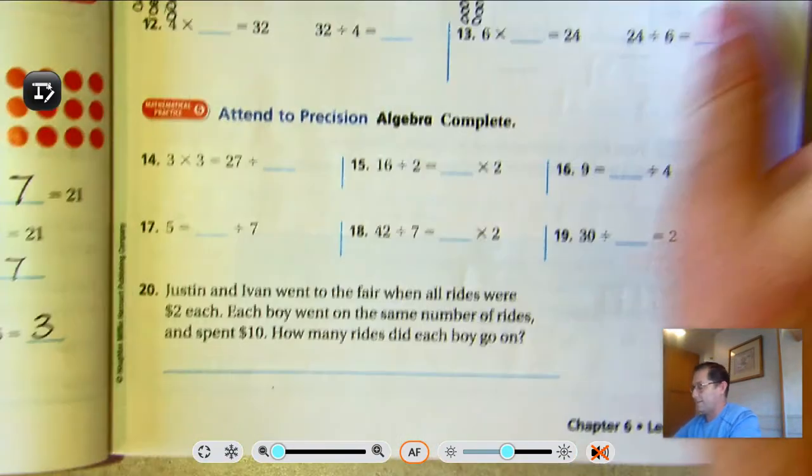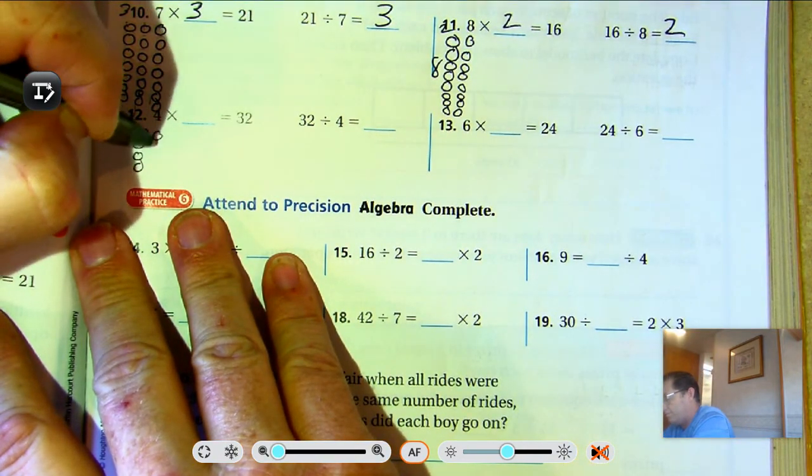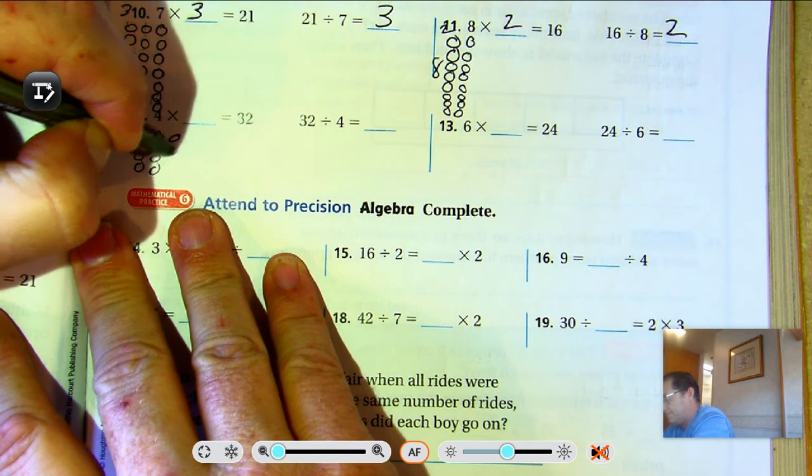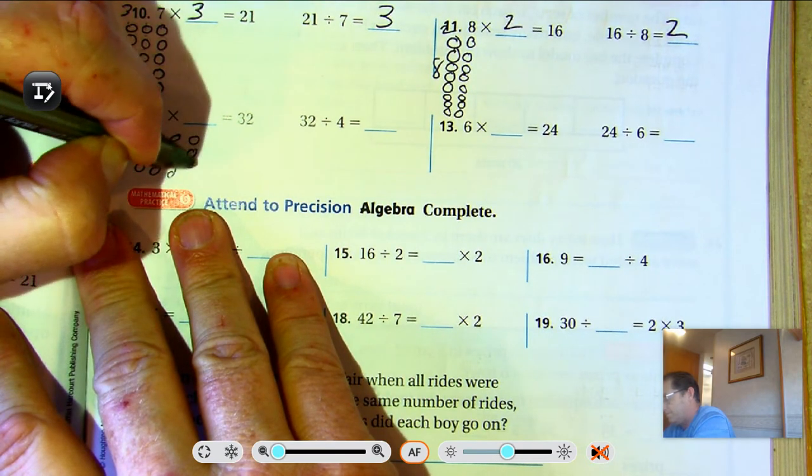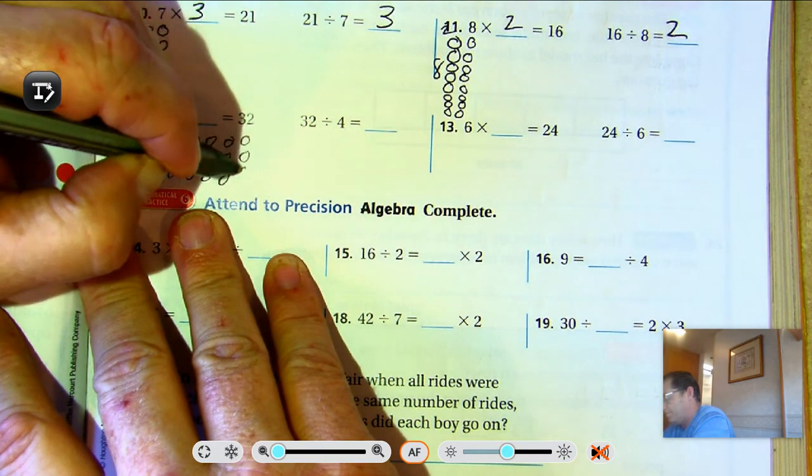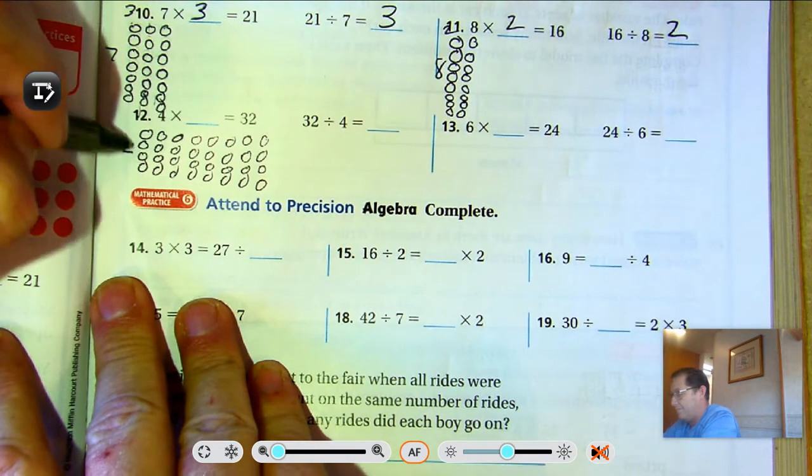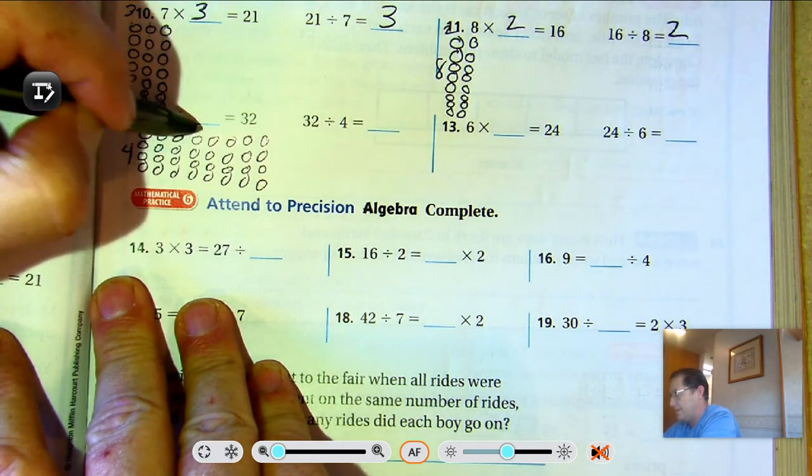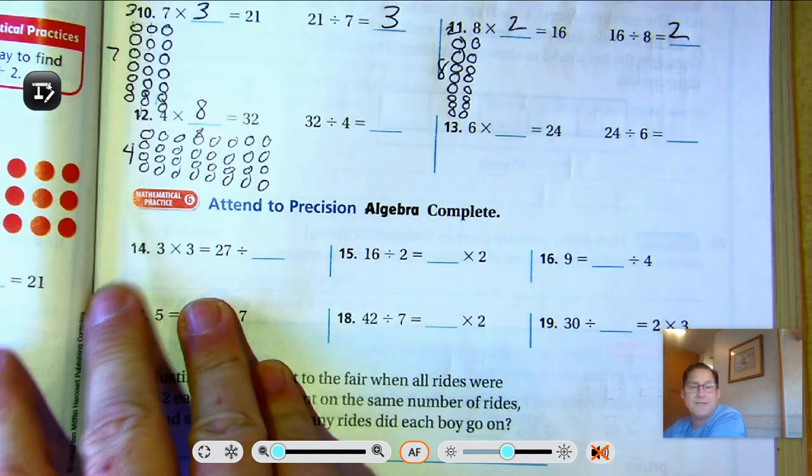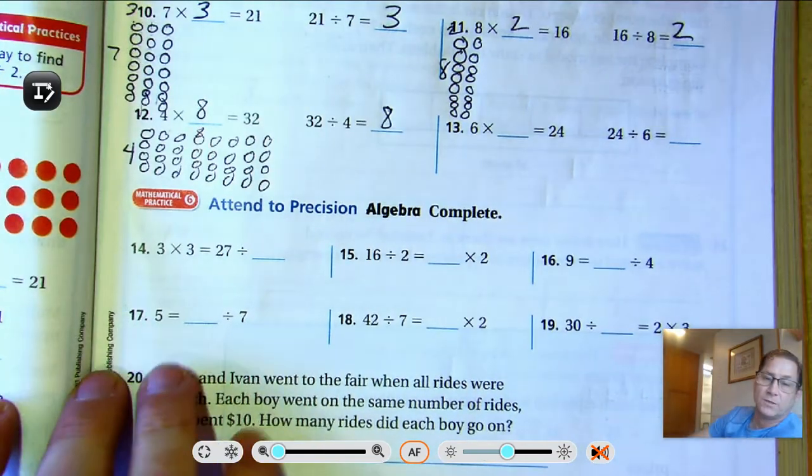Four times what is 32? Counting by fours: 4, 8, 12, 16, 20, 24, 28, 32. So I have four rows of eight. Four times eight is 32. And 32 divided by four is eight.